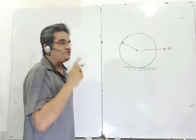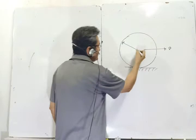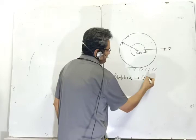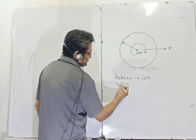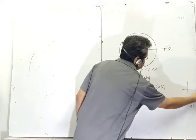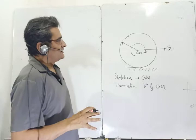When you say rotational motion, we are talking about rotation about the center of mass. When we say translational motion, we are talking about the velocity of the center of mass in an inertial frame (K frame). These two things have to be kept in mind.